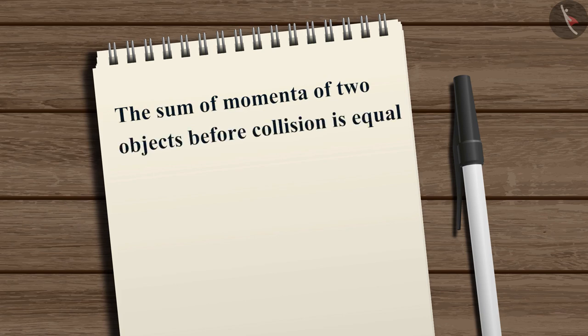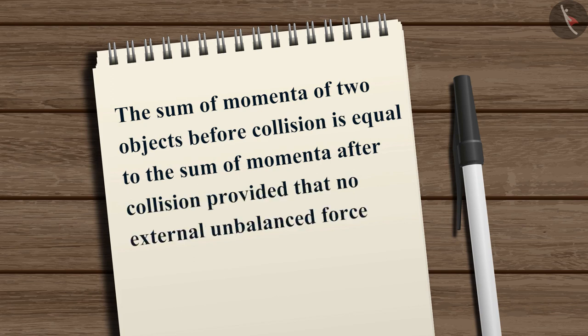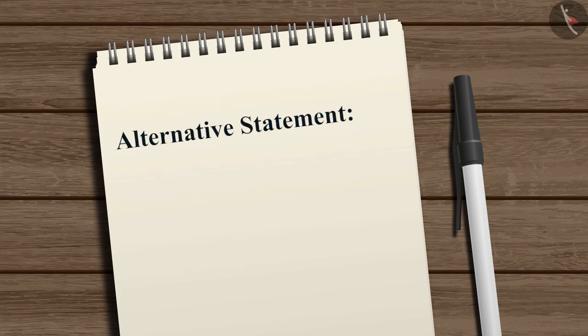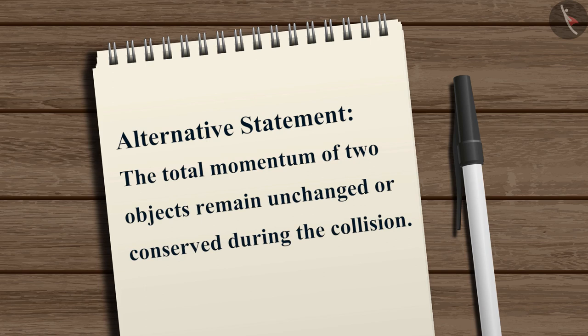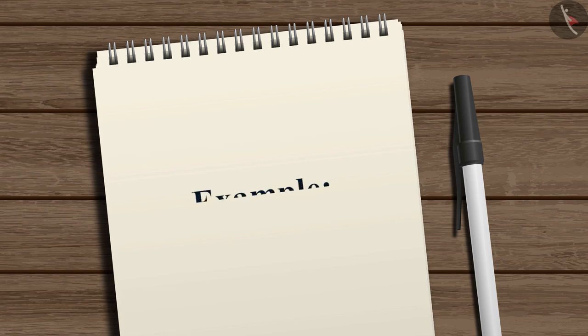Hence, from this ideal collision experiment, we can state that the sum of momenta of two objects before collision is equal to the sum of momenta after collision, provided that no external unbalanced force acts on them. This is known as the law of conservation of momentum. An alternative statement is: the total momentum of two objects remains unchanged or conserved during the collision.